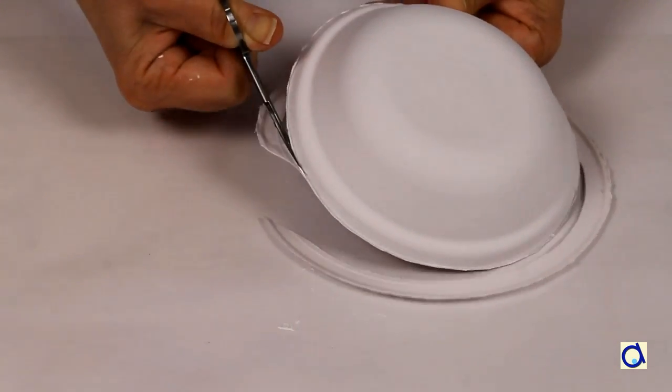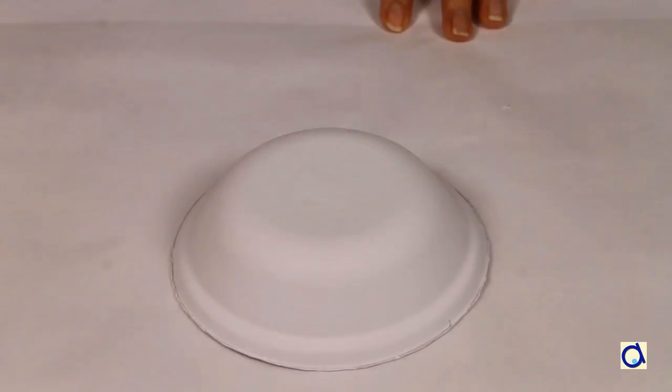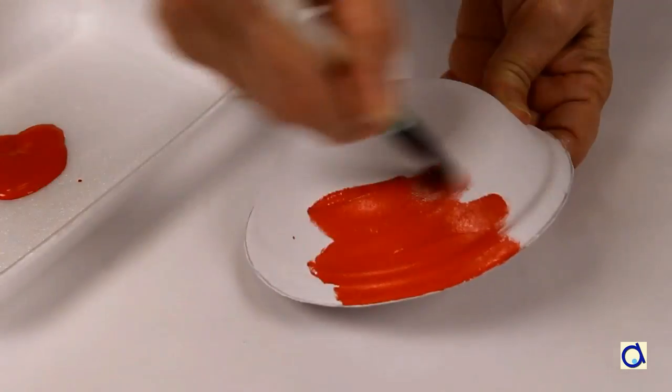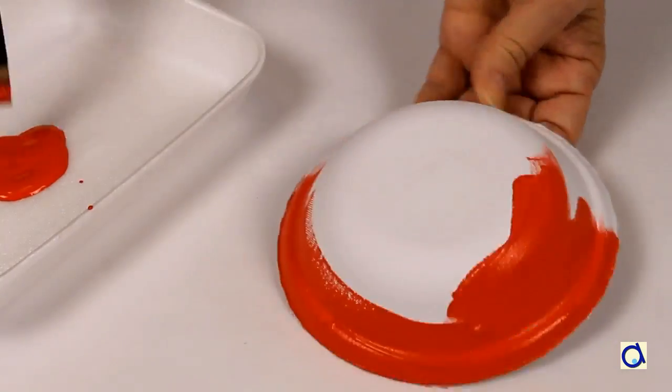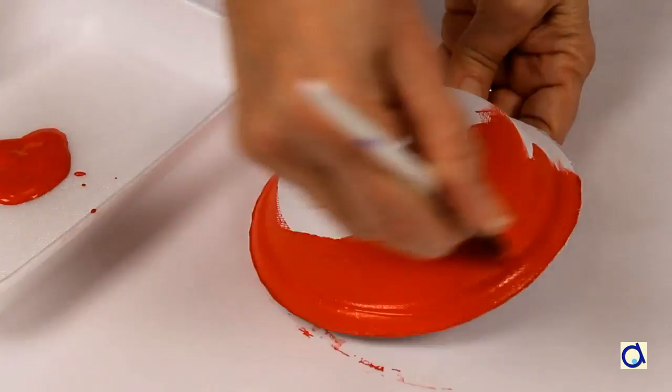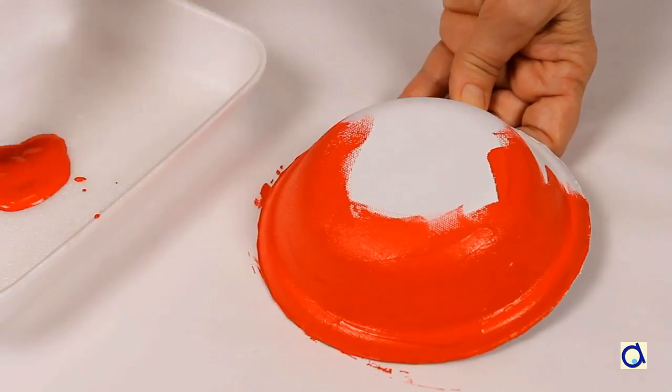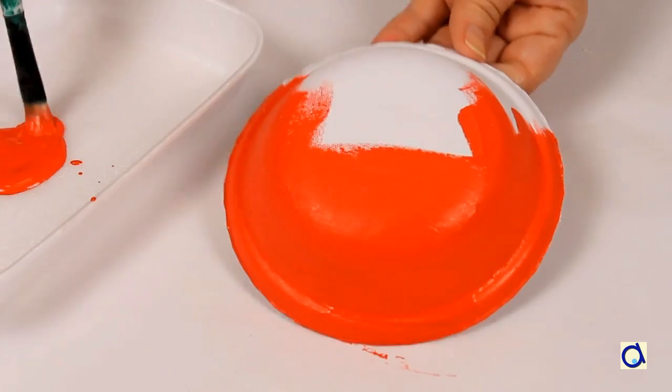The ball will form the cap of the mushroom. You can paint the mushroom in the colours of your choice. I chose to represent a fly agaric. This poisonous mushroom has a bright red cap with white dots.